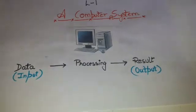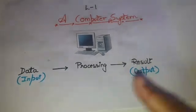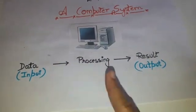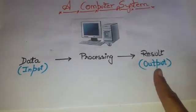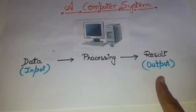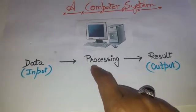So the answer will be computer accepts all the data and then it does the processing and gives the result as an output. What is a computer? Computer is a machine, it's a machine.